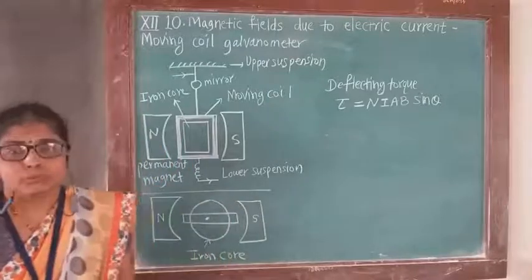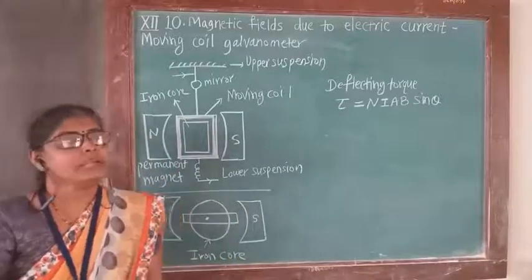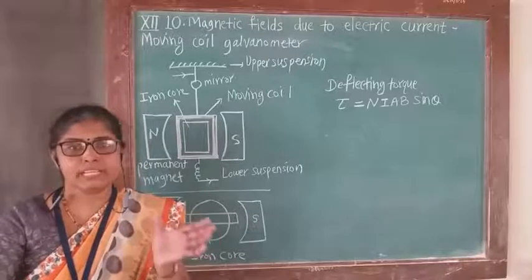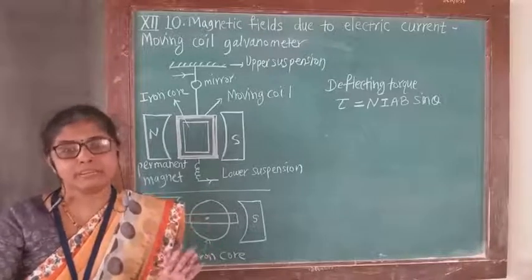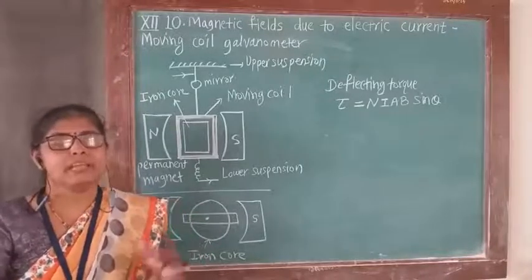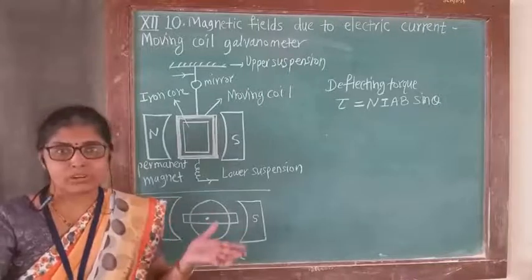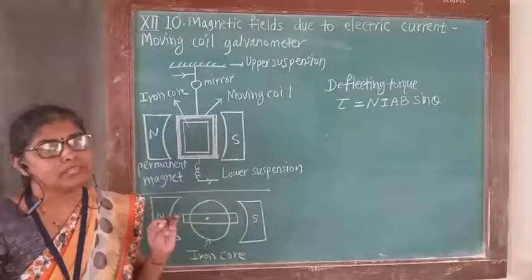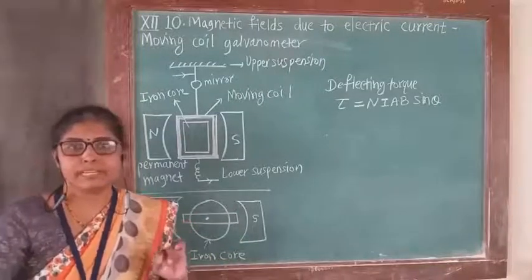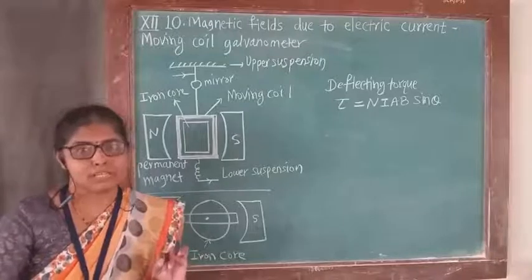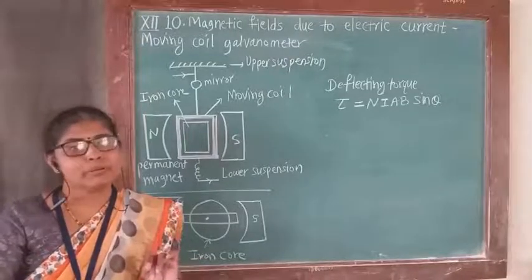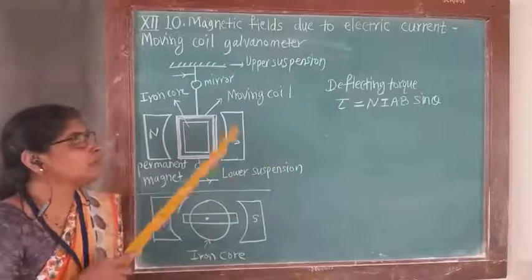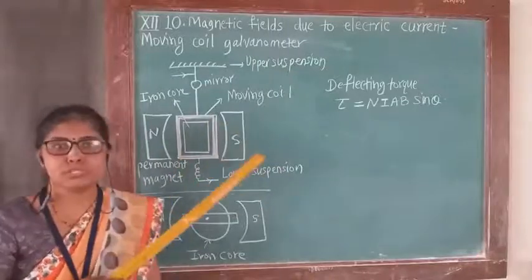We know that in the moving coil galvanometer, a coil is situated in the magnetic field, and due to that magnetic field a torque acts on the coil, and due to that torque the coil gets deflected and we get the deflection. In the analog voltmeter and ammeter, this type of moving coil galvanometer is used.